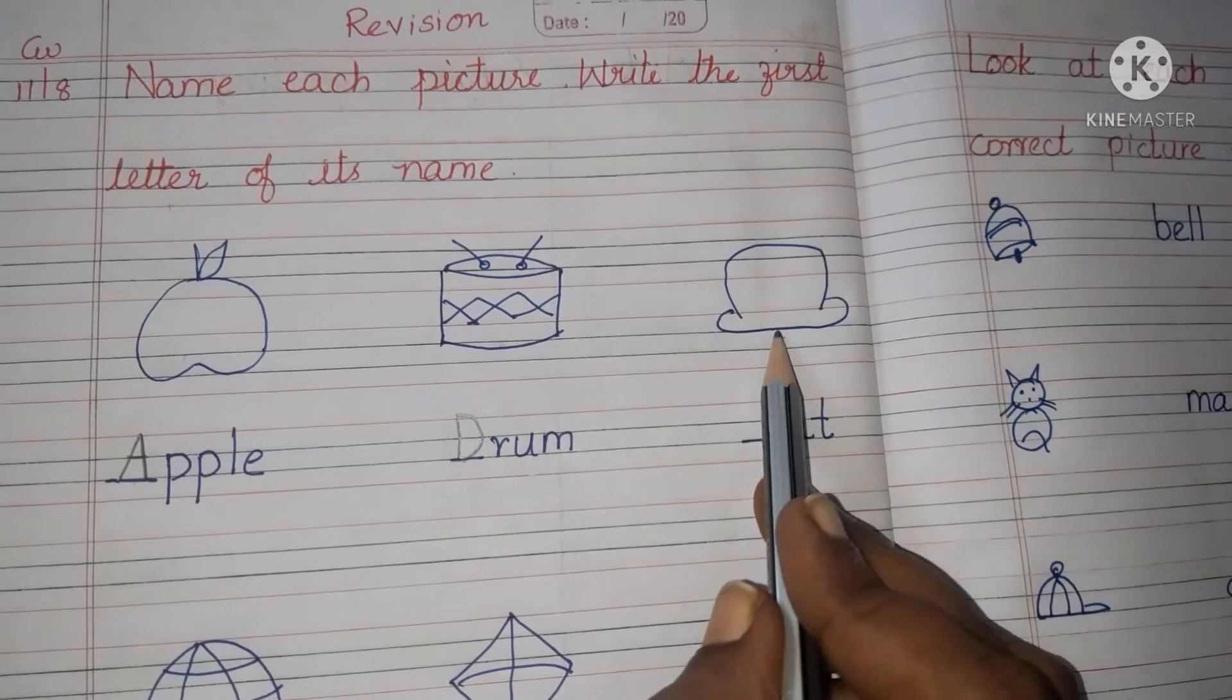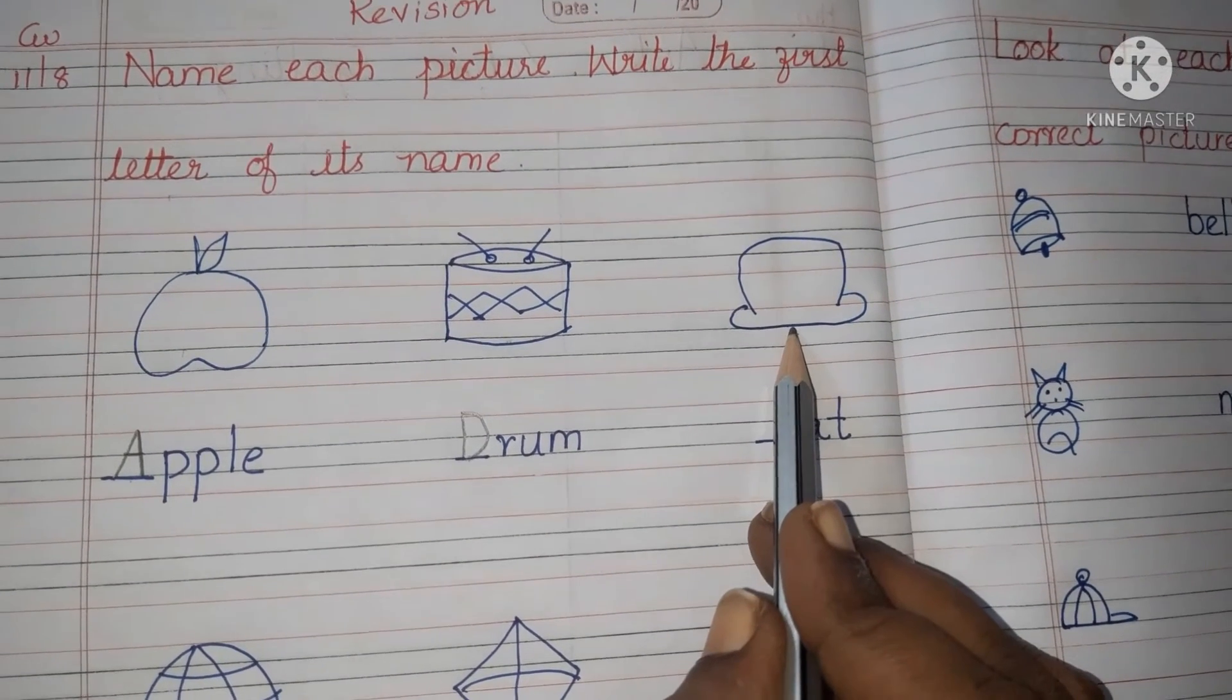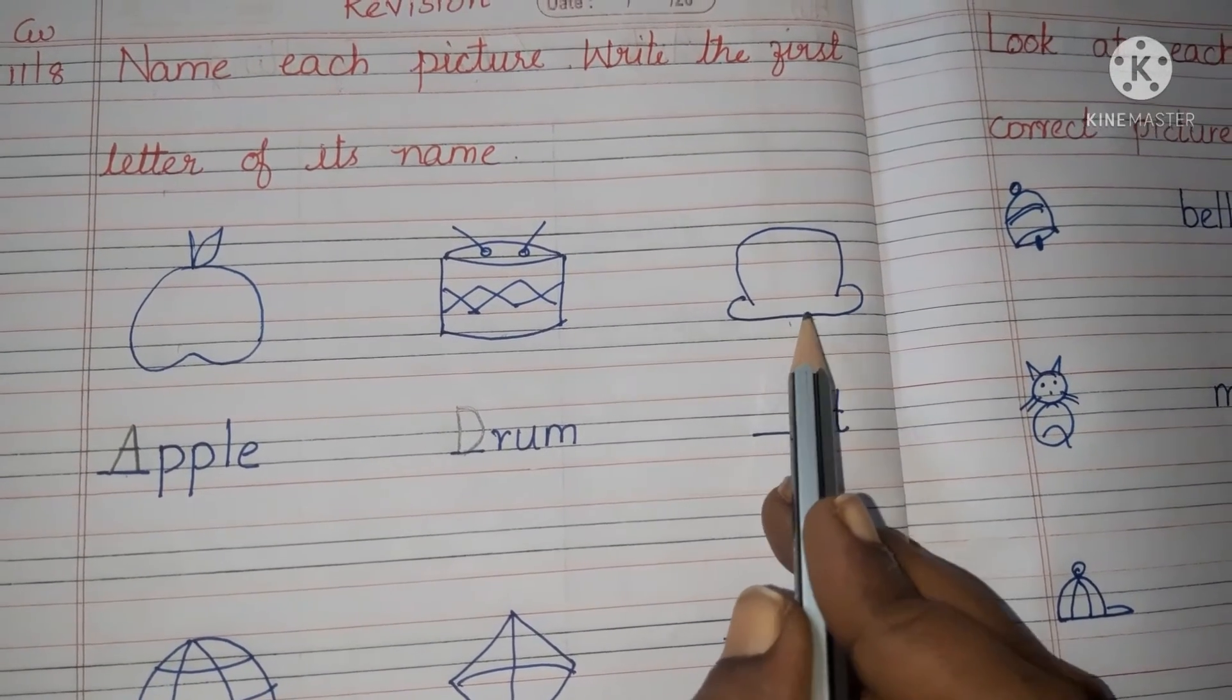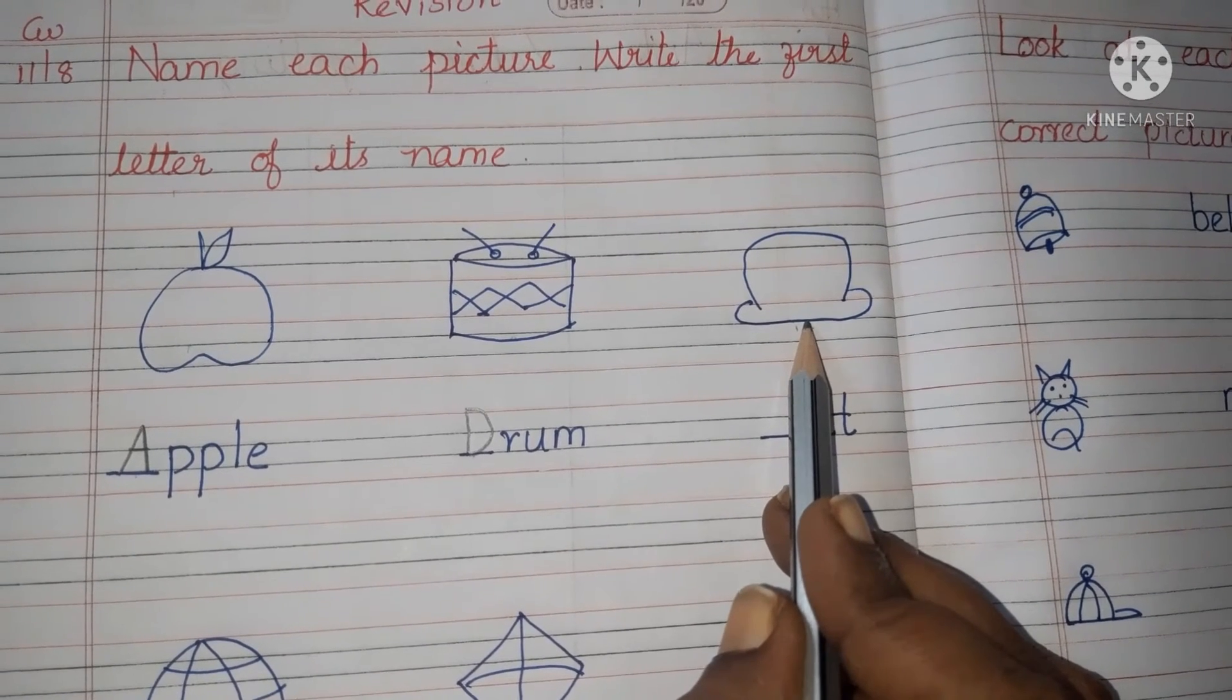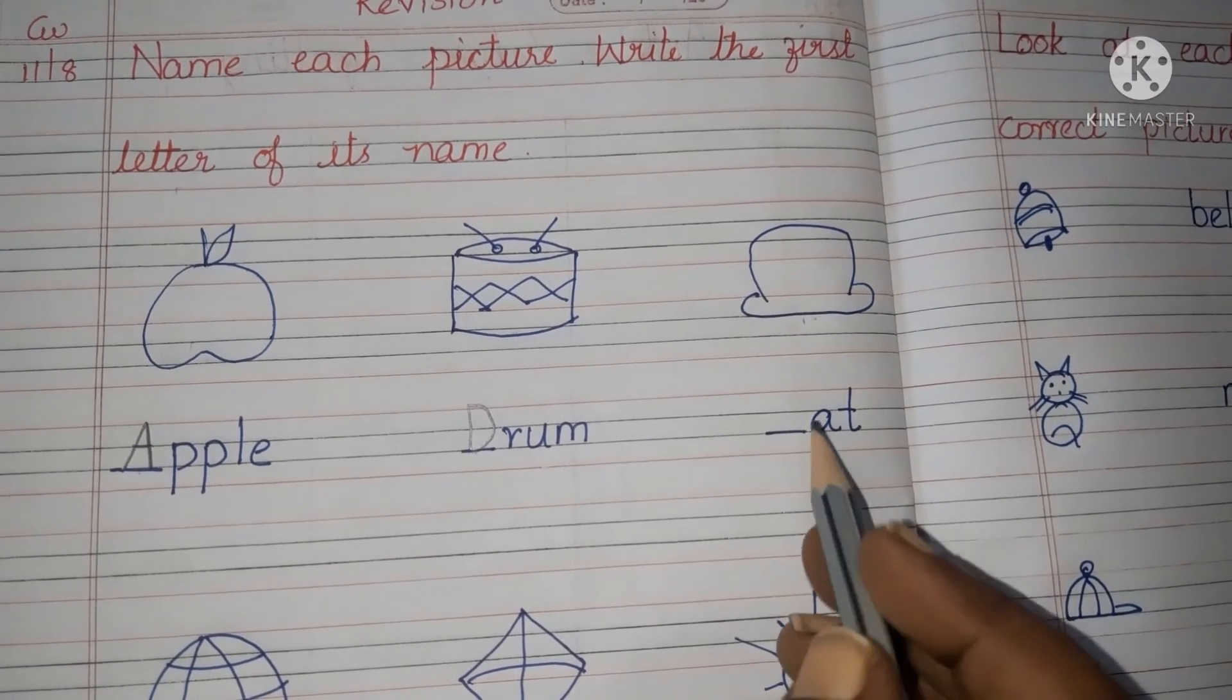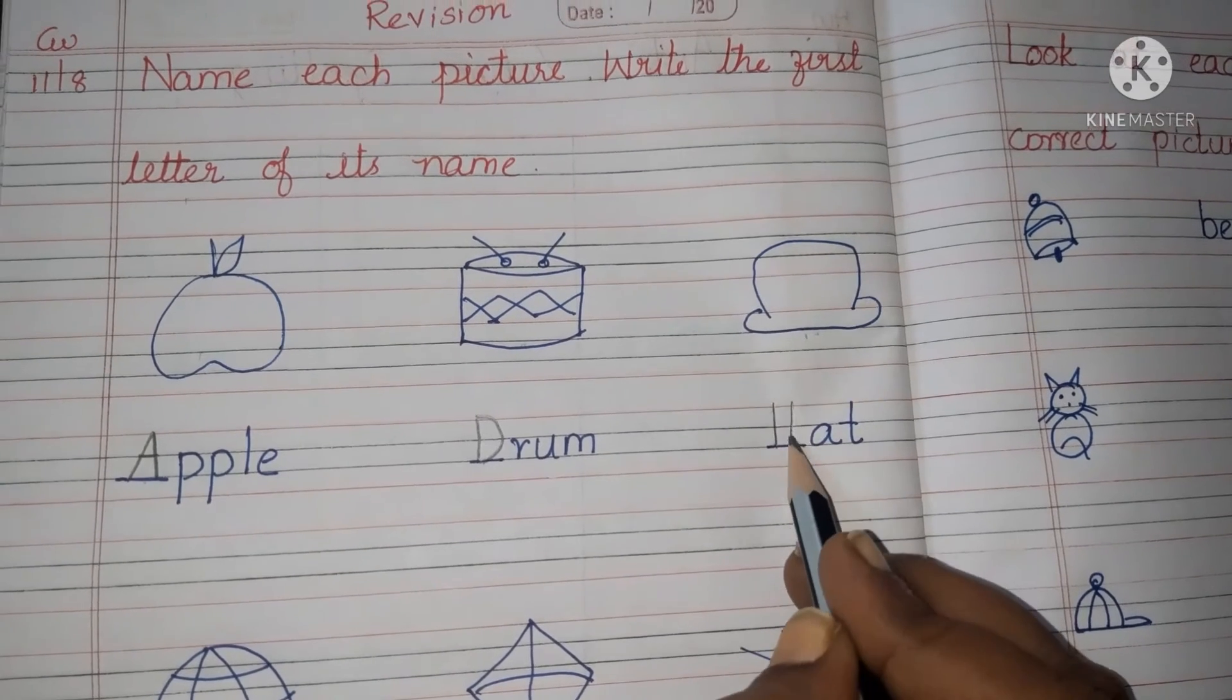Next step. Can anybody can tell the picture? Yes, hat. So what is the spelling of hat? H-A-T, hat. So write the first letter H.